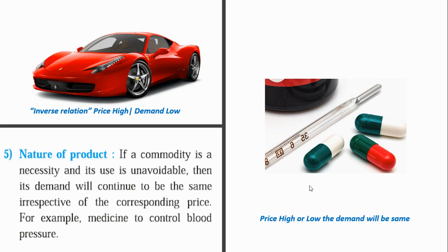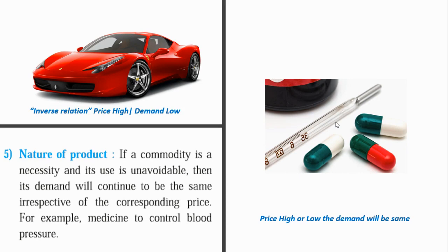If a commodity is a necessity and its use is unavoidable — like medicine — then its demand will continue to be the same regardless of price changes. For example, you wouldn't buy double the medicine just because the price fell. So luxury goods have an inverse relationship with demand, while necessary goods have a direct or unchanged relationship — their demand remains the same.